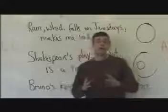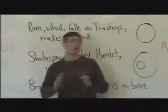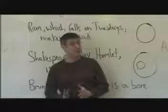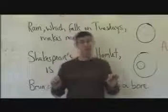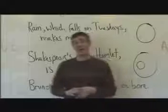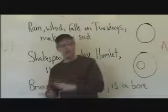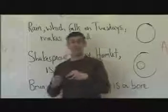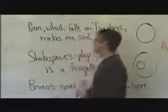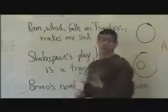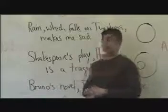We're looking at ways to tell whether elements in a sentence are what are called restrictive elements, which therefore must not be set off by commas, or whether they are non-restrictive elements and therefore must be set off by commas. Now let's look at some more examples that will help us get our minds around this problem.